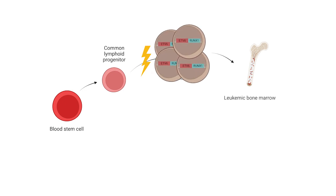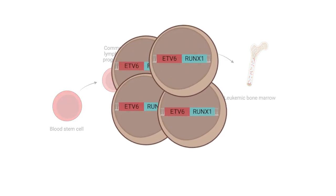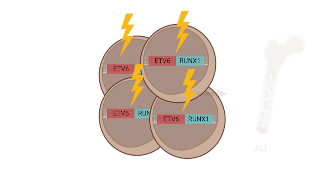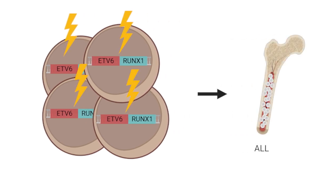For example, a genetic alteration resulting in an ETV6-rungs1 fusion gene can impact the differentiation. Once these cells acquire additional cancer-driving gene mutations, they develop leukemia.